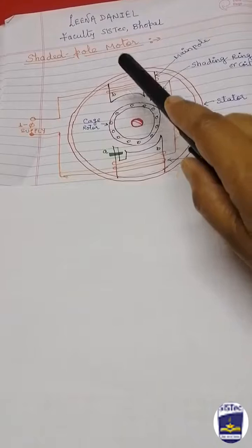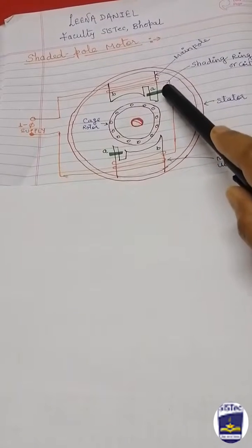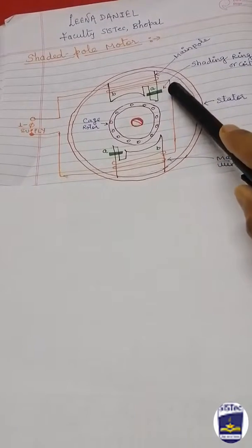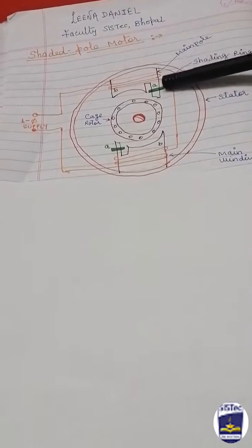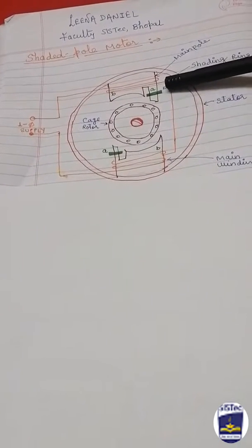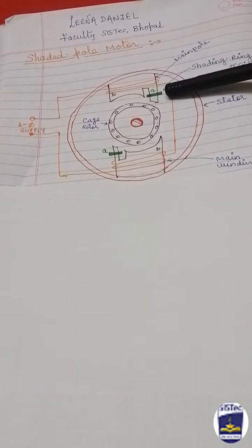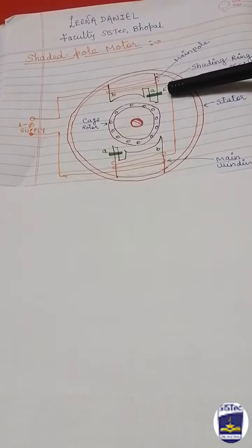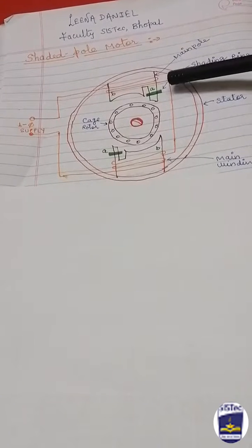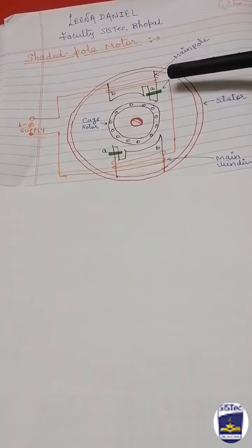This flux is linked with the shaded pole. At this time, this shaded pole behaves like a short-circuited secondary of a transformer. When the flux is linked with this shaded coil, a voltage is induced in this coil.